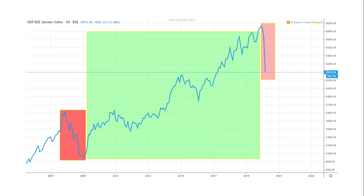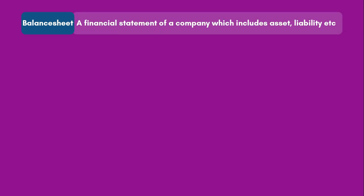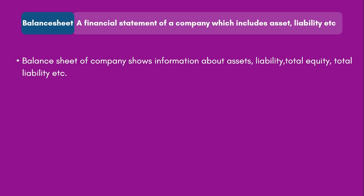The next topic we are going to talk about is a balance sheet. A balance sheet is a financial statement of a company which includes assets, liabilities, etc. It tells you how much assets a company has and how much liability a company has, helping you evaluate the company. A balance sheet is one of the ideal tools to measure the growth of a company and compare it versus its peers.